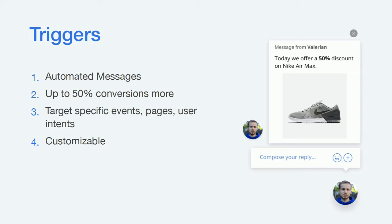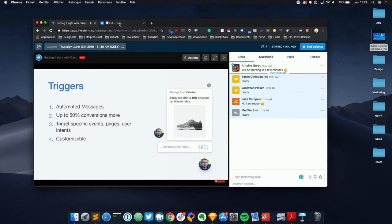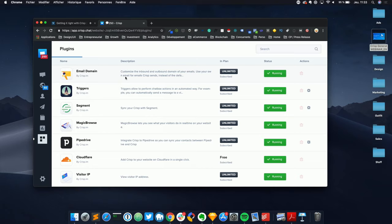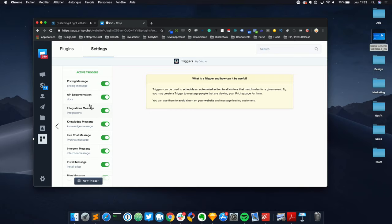Triggers are one of the least-used features in CRISP, and in our opinion that's really unfortunate because triggers are a great way to engage with your users while they are browsing your website. If you haven't set any triggers yet, I'm going to show you how. We've also written articles on our blog with about 25 examples of great triggers. To access triggers, go to the plugins section and look for 'trigger'.